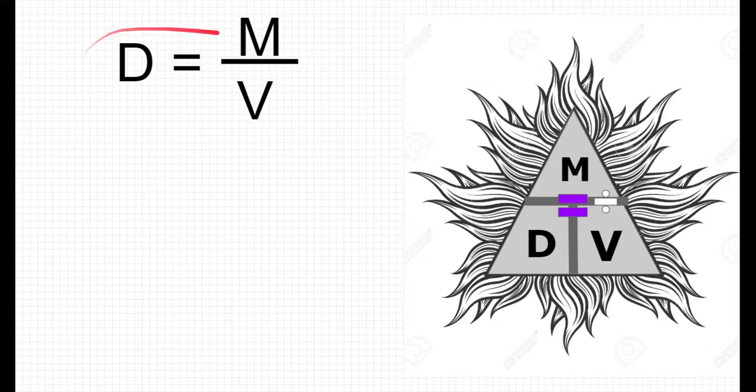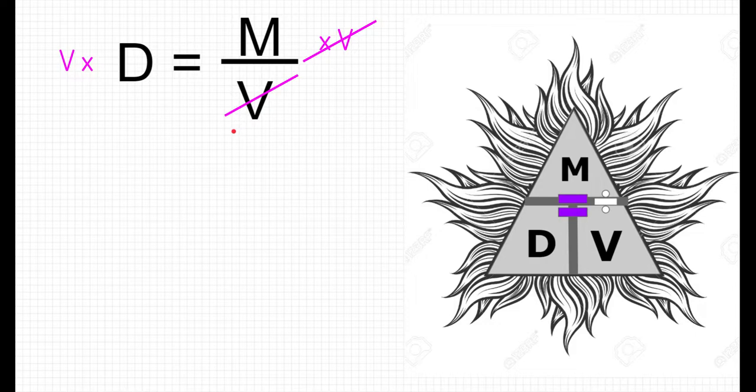But what if we wanted to solve for something else? Algebraically, let's go take a look at our original equation. One thing we can do to this equation is multiply volume on both sides. By doing so, volume cancels out in the numerator and the denominator, but it stays on the left-hand side. We now can solve for something different. Let me rearrange this equation to show you what we can solve for. We can solve for mass.